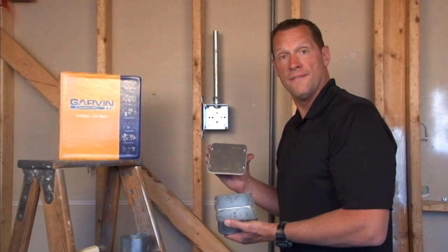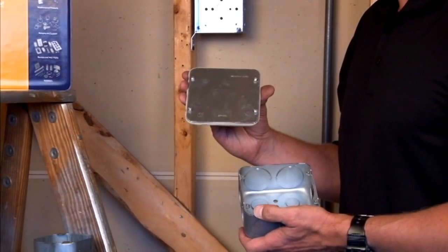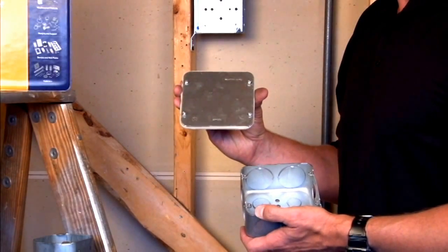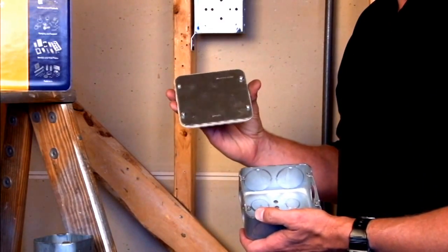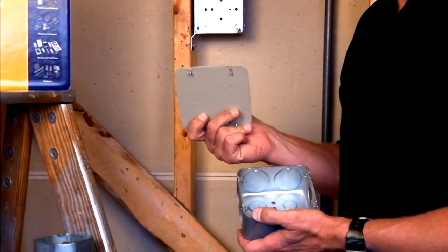Part number 72C1VT is a 4 and 11/16 inch flat blank cover with captivated 8-32 box screws and an airtight gasket adhered to the back side.